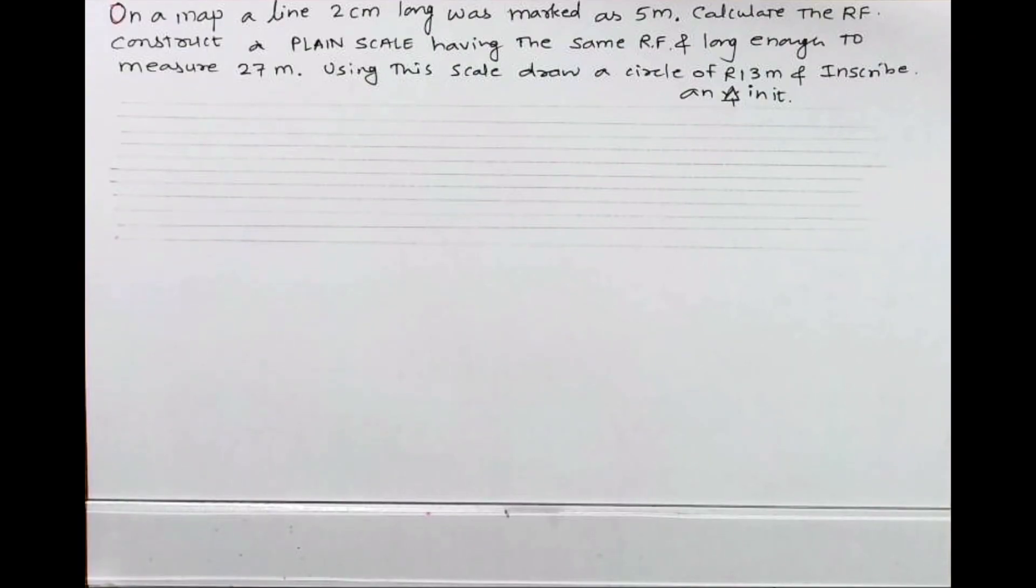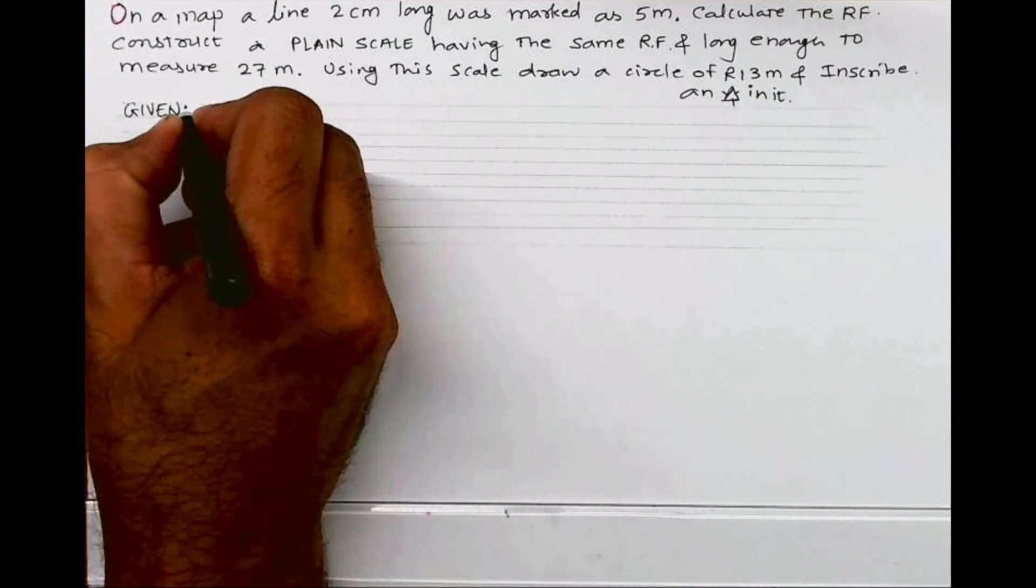Welcome to technical drawing. Today we will see this sum. On a map, a line 2 cm long was marked as 5 m. Calculate the RF. Construct a plane scale having the same RF and long enough to measure 27 m. Using this scale, draw a circle of radius 13 m and inscribe an equilateral triangle in it.